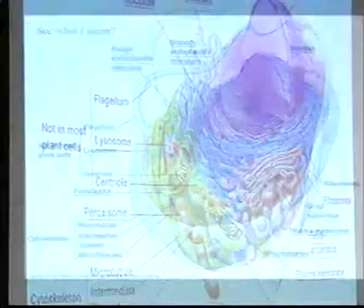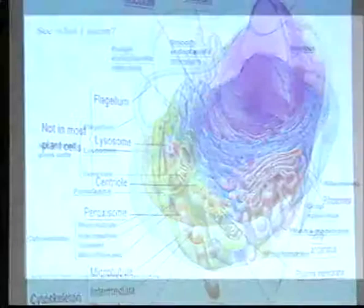Basically, this chapter does a quick tour of the cell and talks about the functions of these organelles. We don't go into huge detail here — we spend essentially the rest of the term talking about what some of these organelles do.